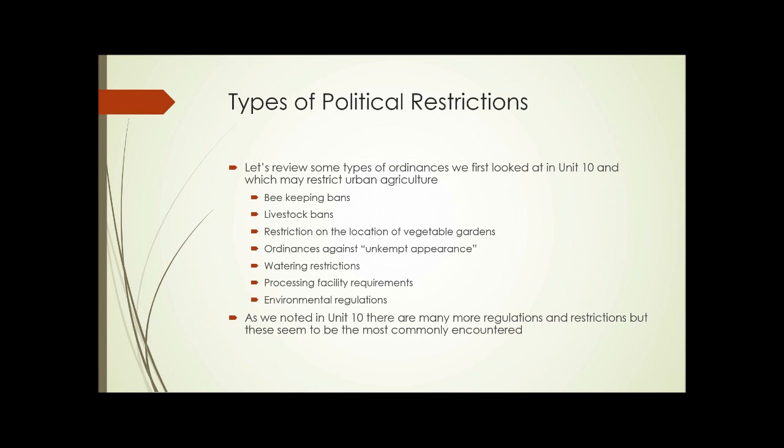Let's review some of the types of ordinances that we looked at in Unit 10 that may be restrictive to the practice of urban agriculture. Things such as beekeeping bans or livestock bans, restrictions on the locations of vegetable gardens, ordinances against unkempt appearance, watering restrictions, processing facility requirements, and environmental regulations. As we noted in Unit 10, there are many more regulations and restrictions that we have to deal with, but the things listed here seem to be the things that are most commonly encountered.